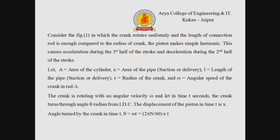Let capital A be the area of the cylinder, small a be the area of the pipe (suction or delivery), l be the length of the pipe (suction or delivery), r be the radius of the crank, and omega be the angular speed of the crank. The crank rotates with angular velocity omega, and in time t seconds the crank turns through angle theta radians from IDC (inner dead center). The displacement of the piston in time t is x, and the angle turned is theta = omega × t, where omega = 2πn/60, so theta = (2πn/60) × t.